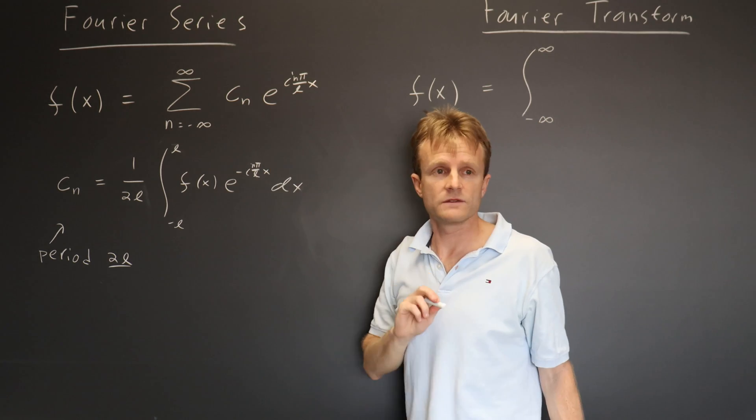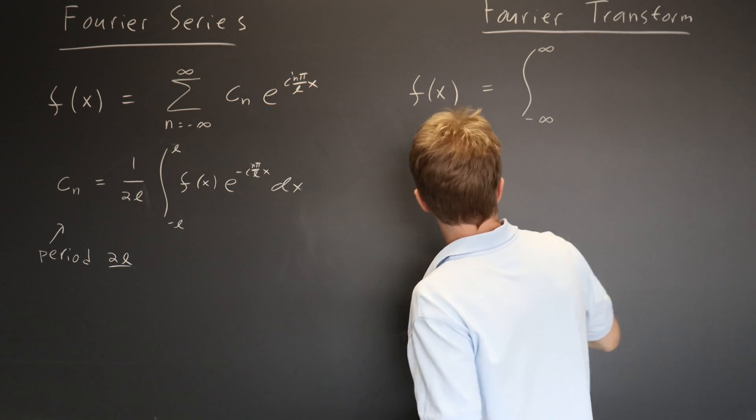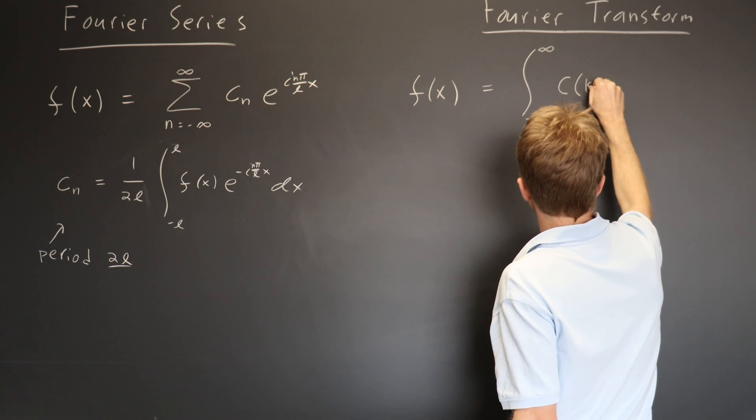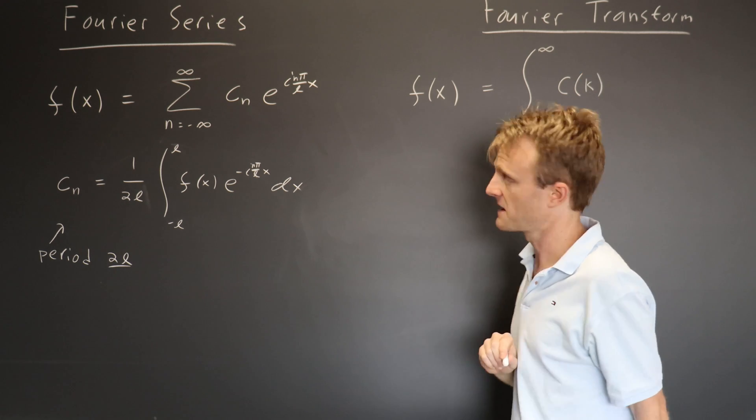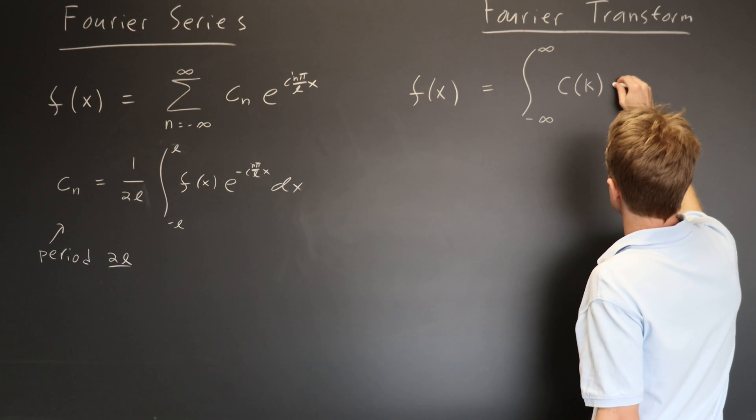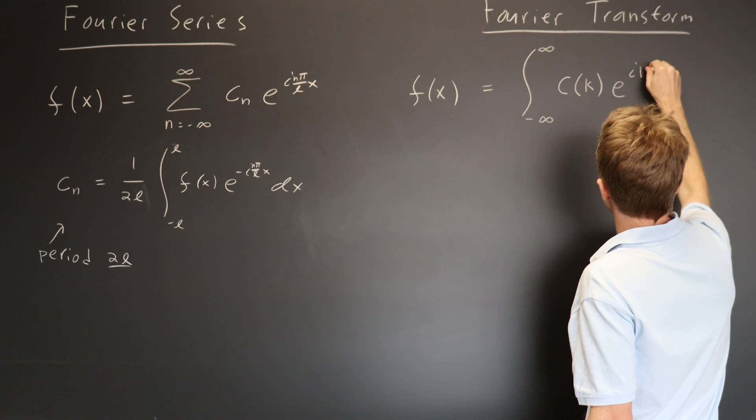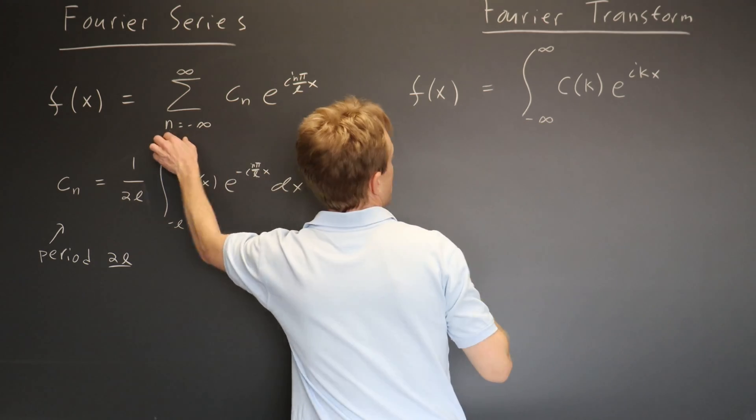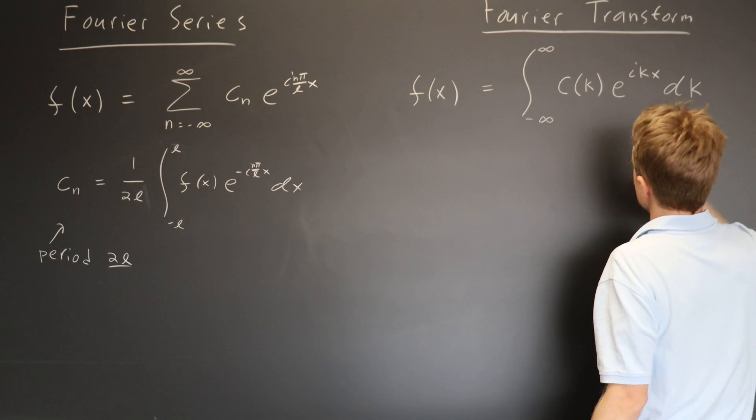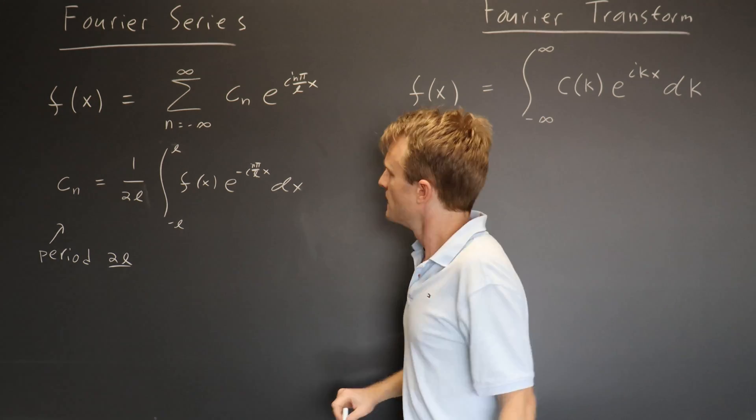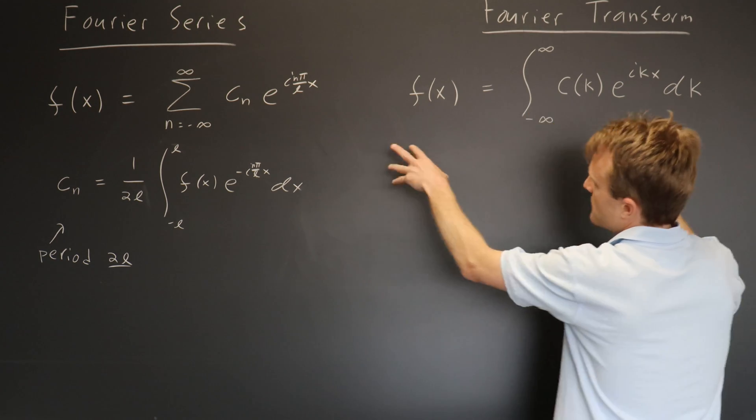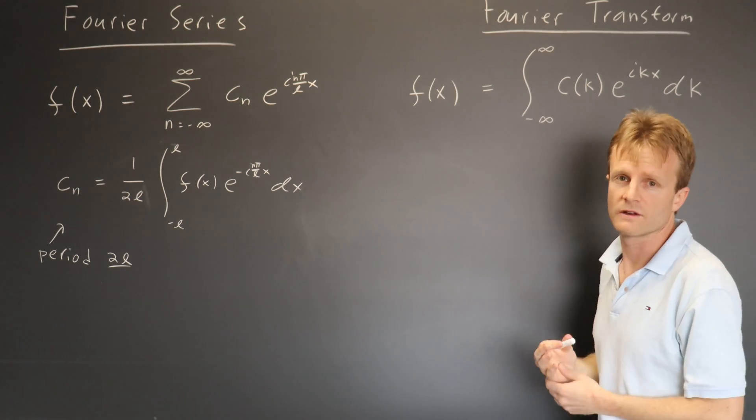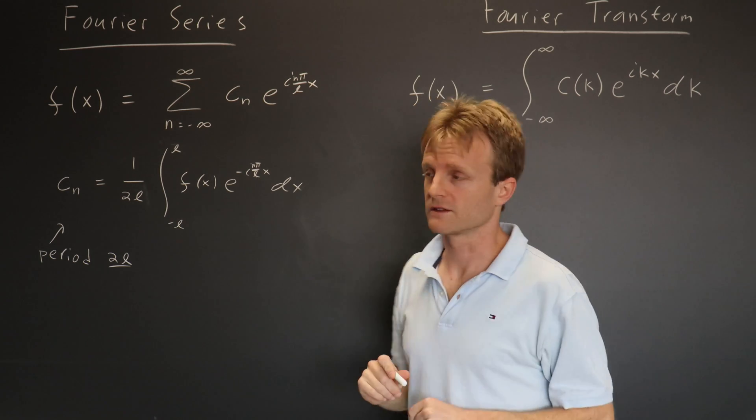And instead of a discrete set of numbers, c sub n, we have a function, c of k. Instead of n, the continuous parameter, and we have e to the i kx. And now instead of summing over n, we are integrating over k. So don't worry about why the n pi over l disappeared. You can do it carefully and all that stuff falls out. For this video, I just want to jump to the answer.